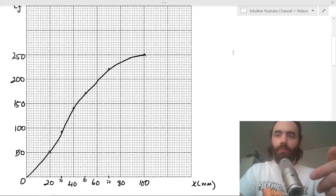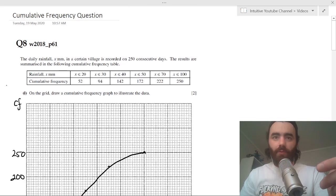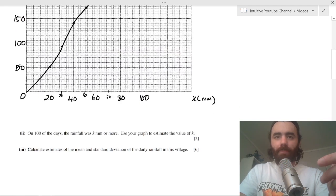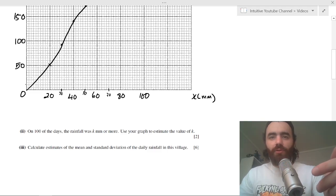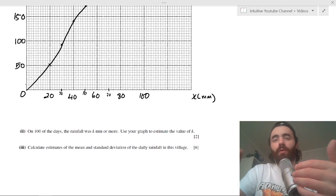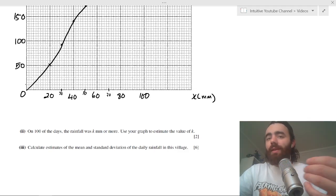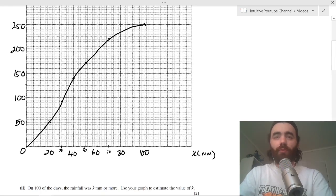That should be pretty straightforward. Then from there, they want you to calculate: on 100 of the days, the rainfall was k millimeters or more. Use your graph to estimate the value of k. Well, if it was on 100 of the days it was k millimeters or more, that means we have to look at the top 100 days of the cumulative frequency graph.